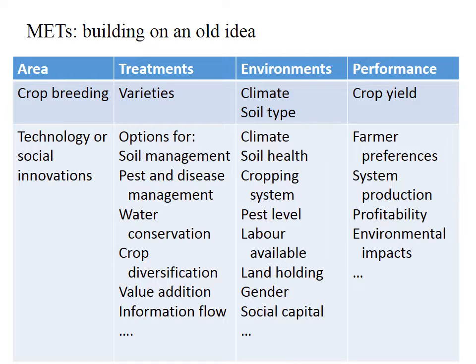Exactly the same ideas apply when you look beyond varieties to other technical options farmers could use, for example for soil fertility management, water conservation or pest management. It will also apply to social innovations. The dimensions of environment that matter will be very much broader and include the social and economic environment as well as the ecological one, and the response or performance measured could be many things other than crop yield.